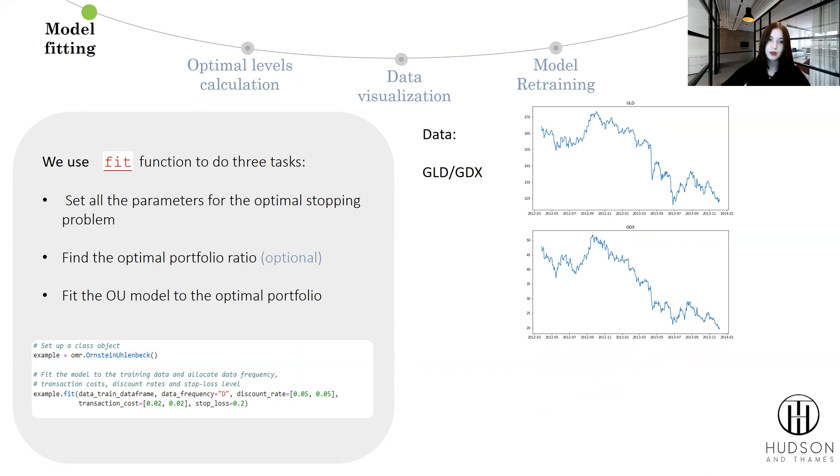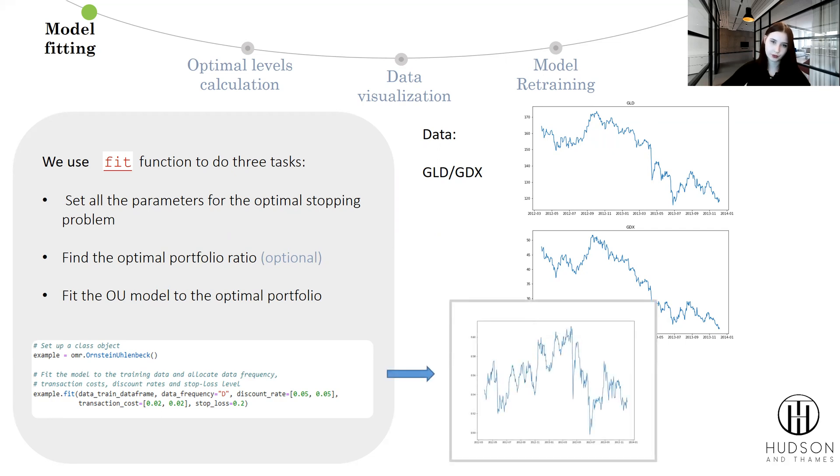We might find the optimal portfolio ratio step as optional because it is possible for the user to provide an already created mean reverting portfolio in the shape of a single time series of prices. But nonetheless, we use our data of gold and GDX index to create an optimal mean reverting portfolio and fit our model to it with the regular fit function.